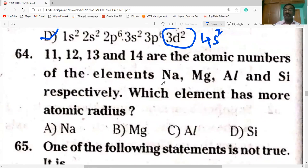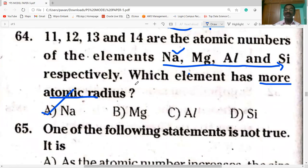Next, 11, 12, 13, 14 are the atomic numbers of sodium, magnesium, aluminum and silicon respectively. Which element has more atomic radius? All these elements are in the same period, third period. You know that in a period, electrons enter into the same shell. Nuclear attraction increases, atomic size decreases. So across the period from left to right, the atomic radius decreases. More atomic radius is the element sodium.